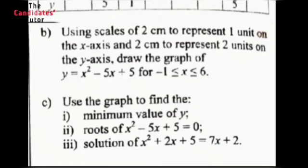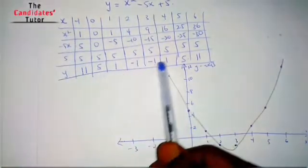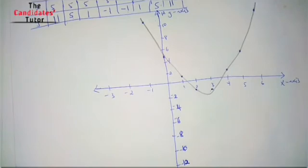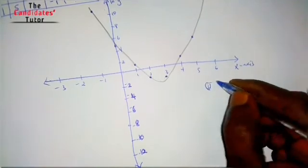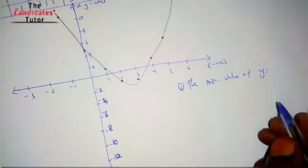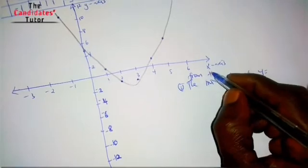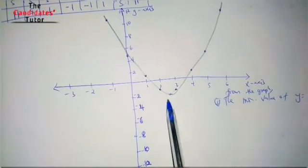To find the minimum value of y for x squared minus 5x plus 5, use the graph — you cannot use a calculator for this part. In your answer booklet, write 'from the graph, the minimum value of y is...' and refer directly to the graph you have drawn. You must do the graphing on a graph sheet and do the written working in your answer booklet.